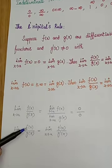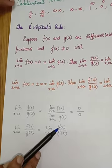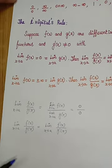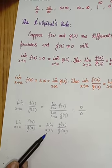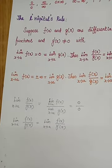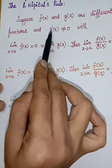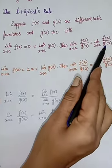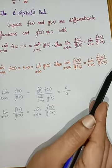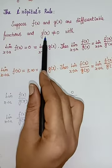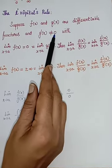You can differentiate the numerator function f(x) separately and the denominator function g(x) separately, then apply the limit. Both give the same answer. The condition g'(x) ≠ 0 is required because if g'(x) = 0, the denominator becomes zero and the result tends to infinity. That is why both functions must be differentiable and g'(x) ≠ 0.